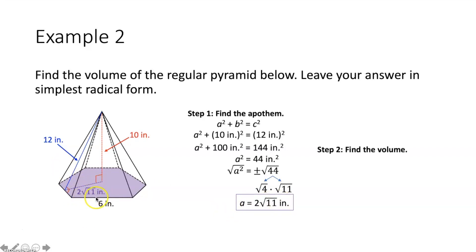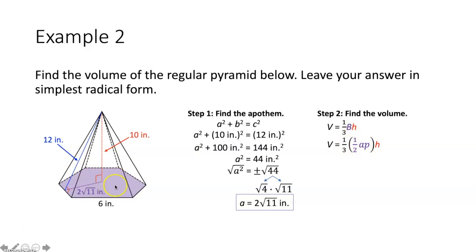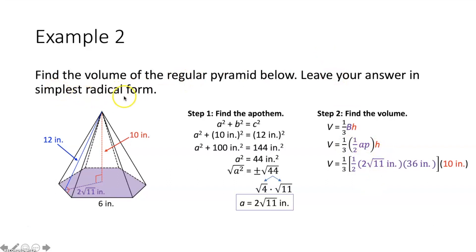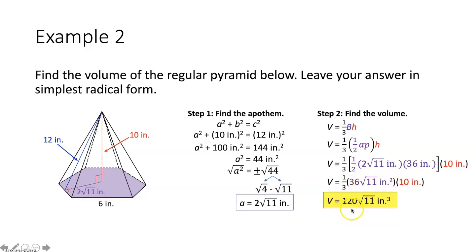Now we have everything needed for the volume. V equals one-third times one-half times apothem times perimeter, times height. Plugging in: one-half times 2√11 simplifies to √11; times 36 gives 36√11 square inches for the base area. Then one-third times 36√11 times 10 equals 12√11 times 10, which gives 120√11 cubic inches. That is the volume of this pyramid.